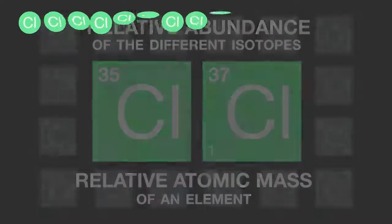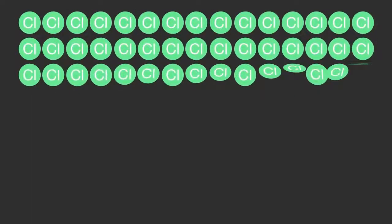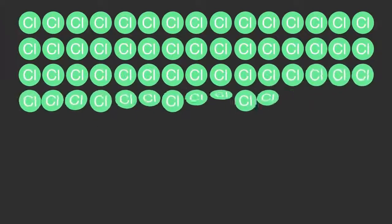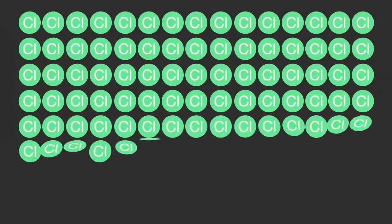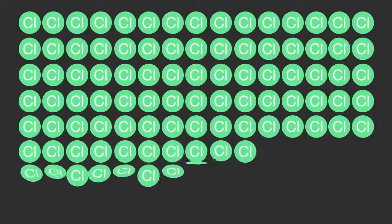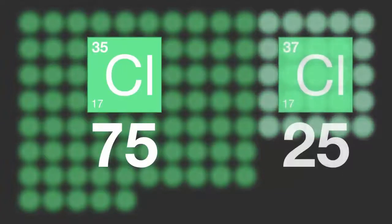One way of visualising this is to imagine that you have a sample of 100 naturally occurring chlorine atoms. Based on the abundance in the example already given, 75 of these would be chlorine-35 and 25 would be chlorine-37.